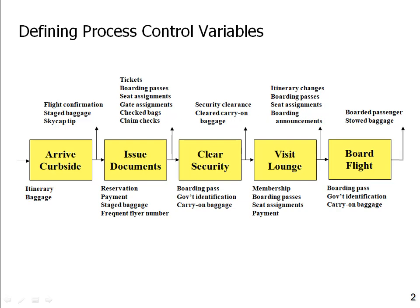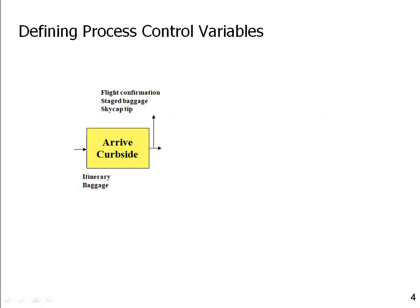Let's take a classic process map — here's one for arriving at the airport, arriving at the curbside, through the things we do to check in when we go to the airport to take a flight, down to boarding a flight. Let's take a look at one of those process steps and what kind of analysis we should be doing for every process step in every process map anytime we try to lay out a new system.